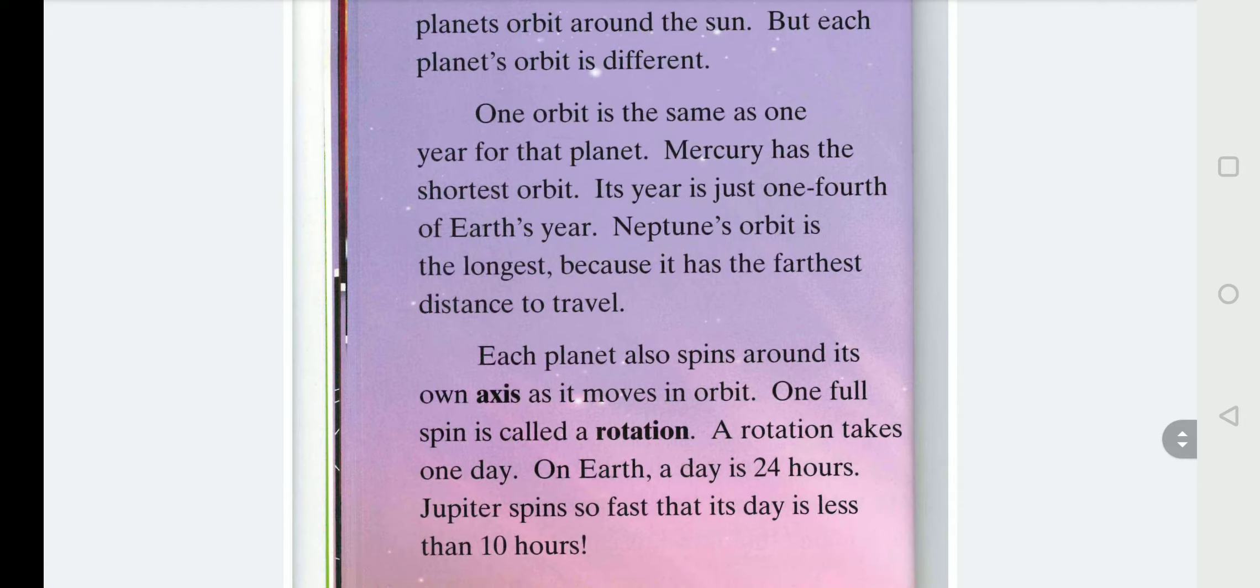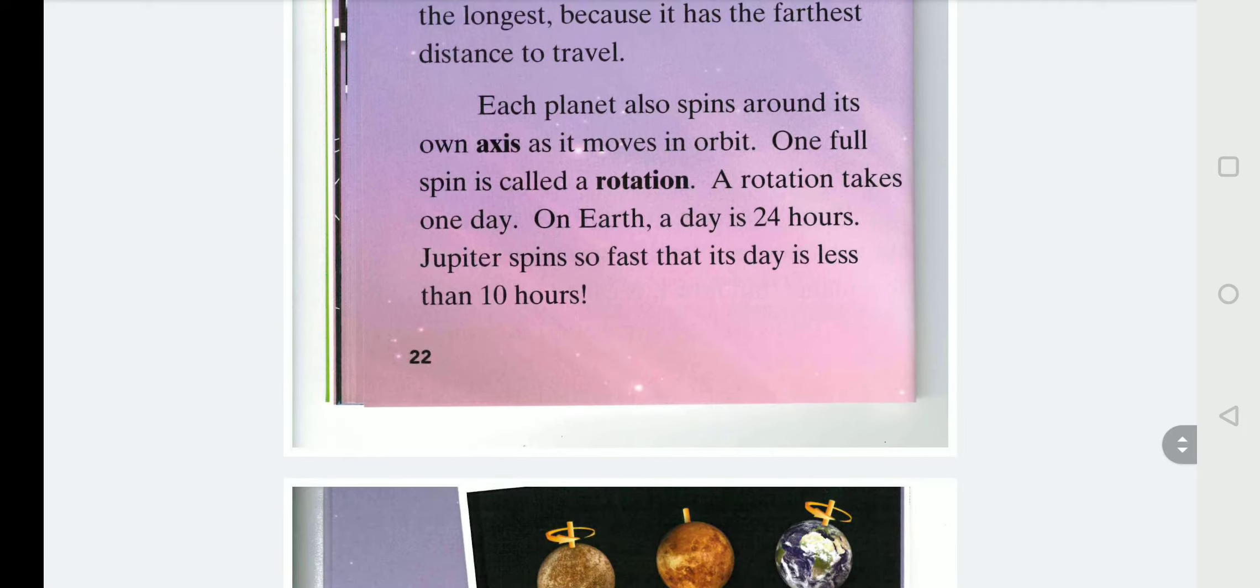Each planet also spins around its own axis as it moves in orbit. One full spin is called a rotation. A rotation takes one day. On Earth, a day is 24 hours. Jupiter spins so fast that its day is less than 10 hours.